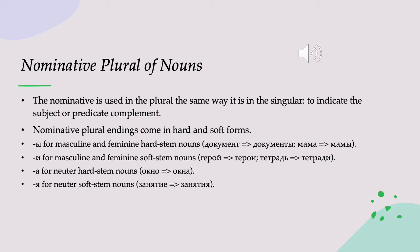For neuter, the hard stem nouns are going to add А — we drop the О and add А. We'll talk more about stress shift later. And then the soft partner for А is Я, and so for neuter soft stem nouns we drop the О and add Я. A college class becomes Я in the plural.